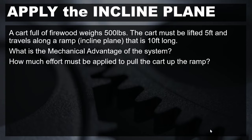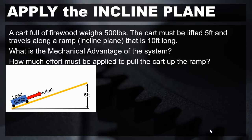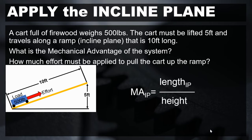To begin with, we need to diagram this problem. We're going to start by drawing a ramp. We know that there is a load of firewood that has to be pulled up the ramp with our effort. We know that the load weighs 500 pounds, the ramp has to overcome a 5-foot vertical climb, and that the ramp is 10 feet long. We're going to apply these variables to the equation for mechanical advantage of the inclined plane.